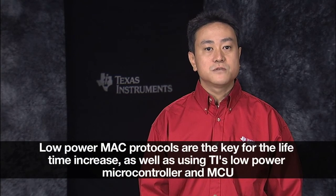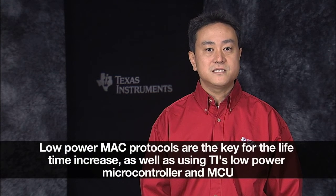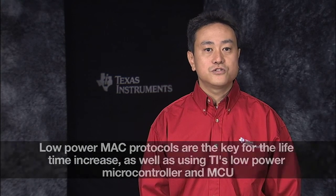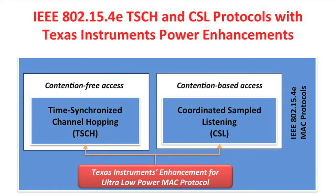This minimizes power consumption of wireless sensor devices by controlling the active time of the low power radio and microcontroller to the minimum. TI's Ultra Low Power Sensor Network design is based on two key MAC protocols of the IEEE 802.15.4e standard. The first is the Time Synchronized Channel Hopping Protocol, or TSCH. The second is Coordinated Sampled Listening Protocol, or CSL. Such protocols are the extension of the existing 802.15.4 technology for home and industrial automation.